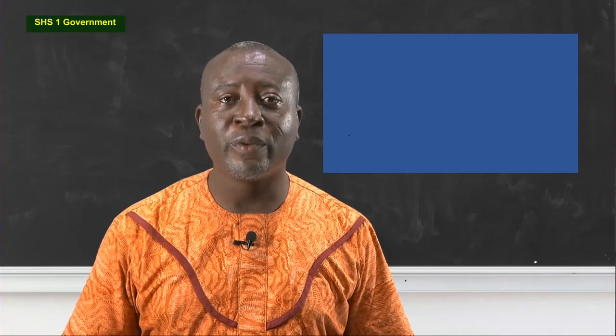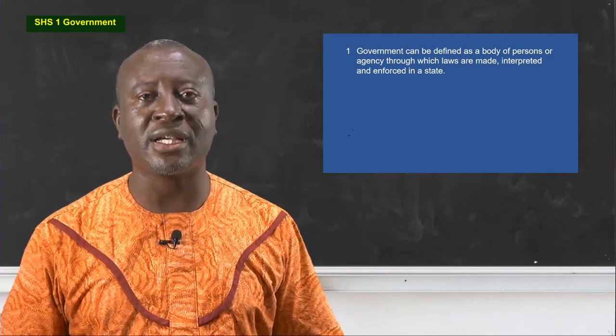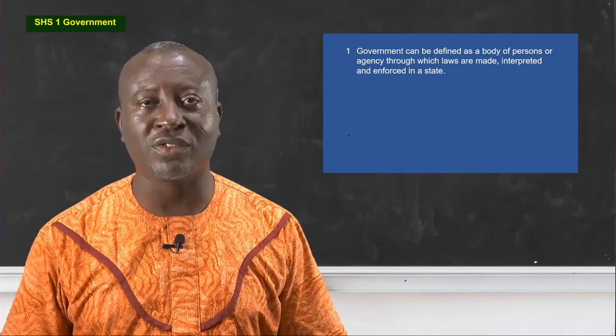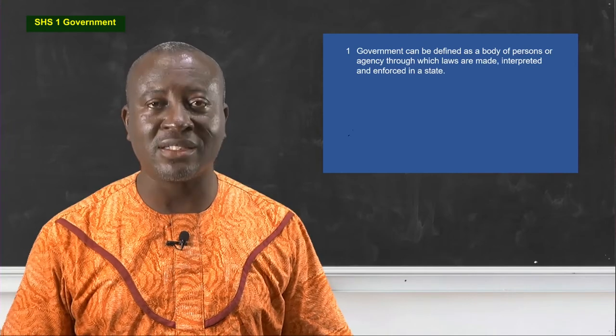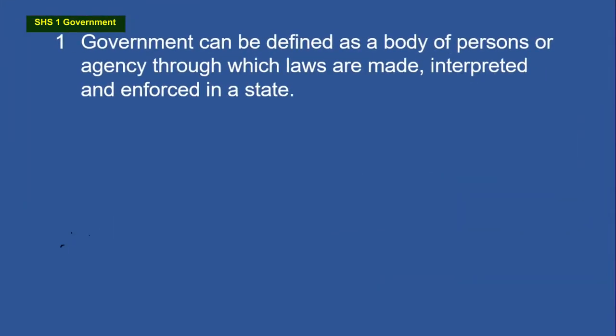We don't have one common definition for government. So with respect to our syllabus, we'll narrow the definition into three areas. I know you've been reading about the definition of government in different textbooks. First, government can be defined as a body of persons or agency through which laws are made, interpreted, and enforced in a state. That is one definition of government.